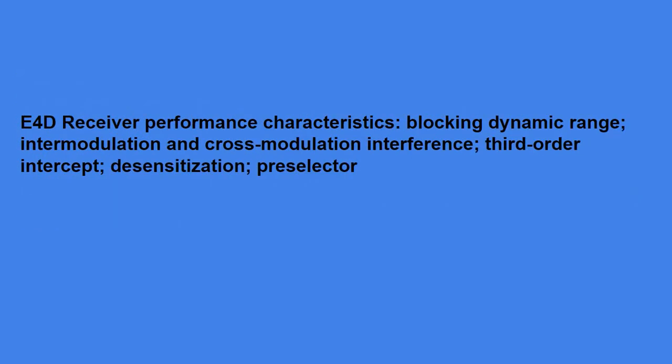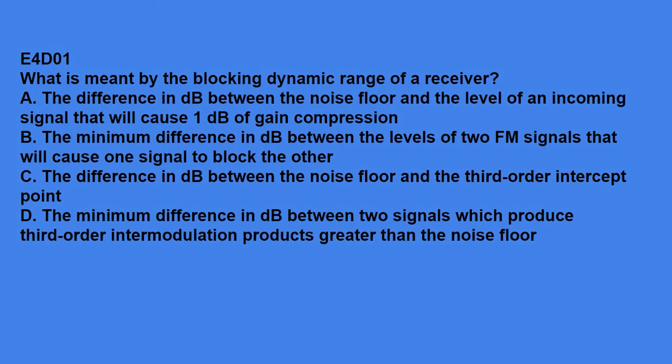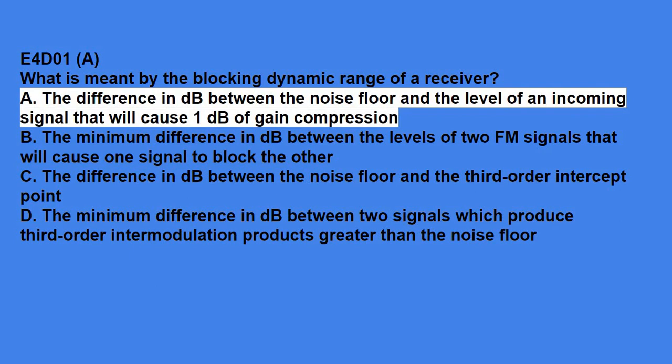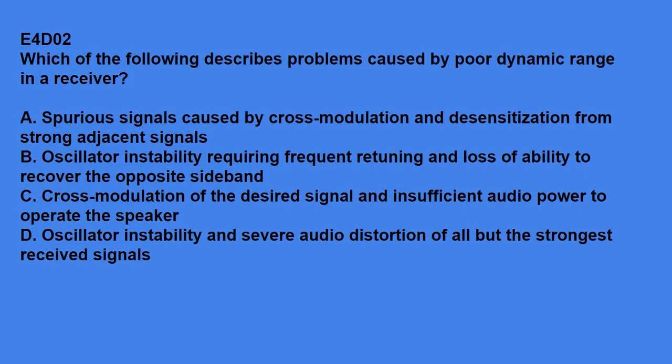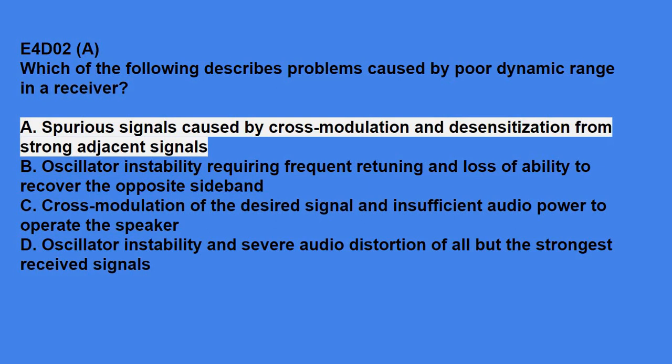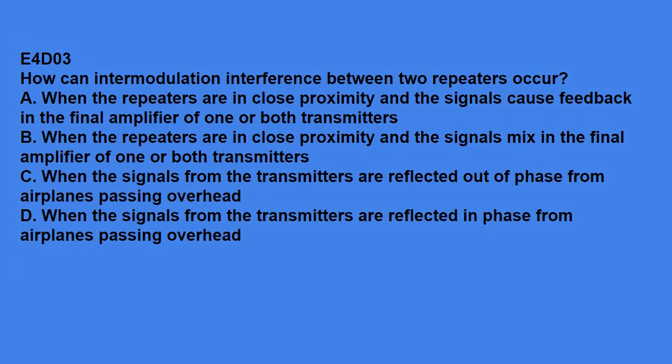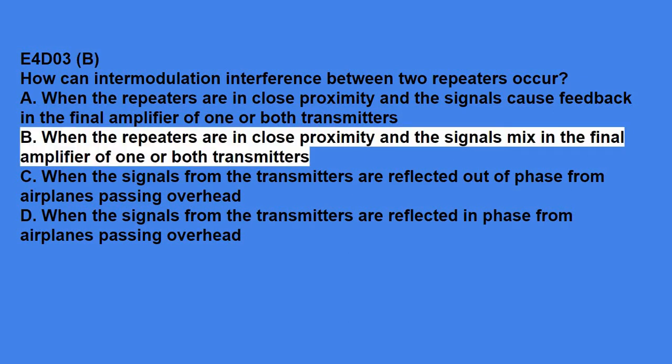E4D, receiver performance characteristics, blocking dynamic range, intermodulation and cross-modulation interference, third-order intercept, desensitization, and preselector. E4D01, what is meant by the term blocking dynamic range of a receiver? It means the difference in dB between the noise floor and the level of an incoming signal that will cause 1 dB of gain compression. E4D02, which of the following describes problems caused by poor dynamic range in a receiver? Answer is, spurious signals caused by cross-modulation and desensitization from strong adjacent signals. E4D03, how can intermodulation interference between two repeaters occur? Answer is, when the repeaters are in close proximity and the signals mix in the final amplifier of one or both transmitters.